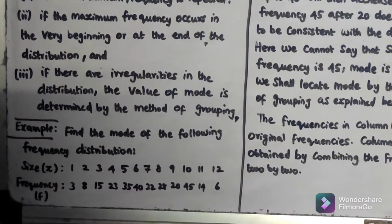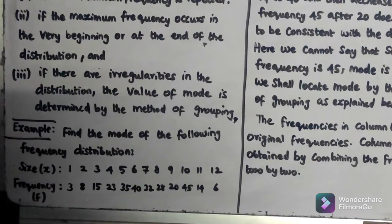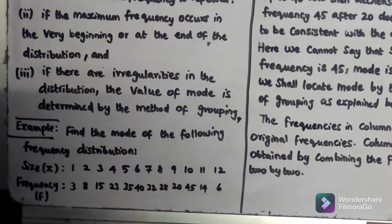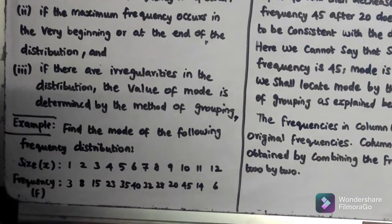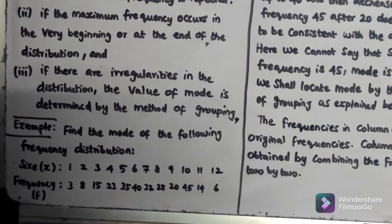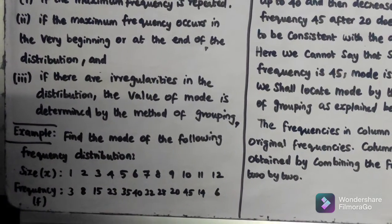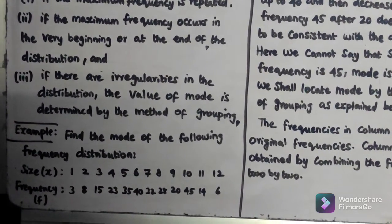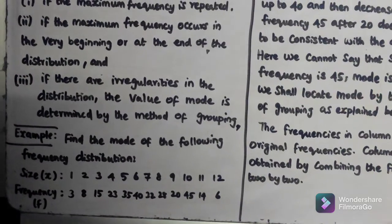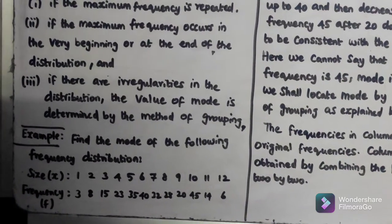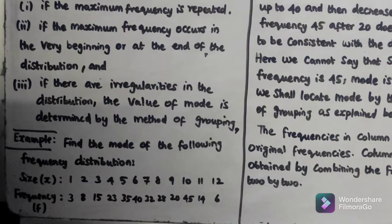The third case is if there are irregularities in the distribution. When distributions have irregularities, the value of mode is determined using the method of grouping.